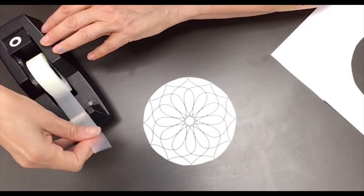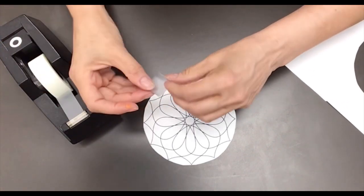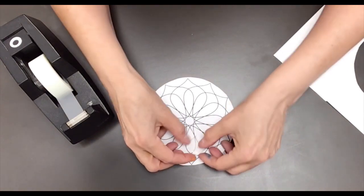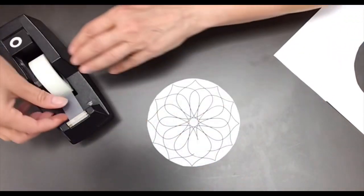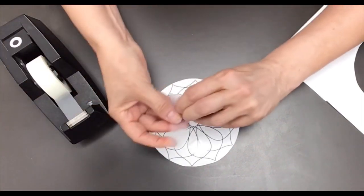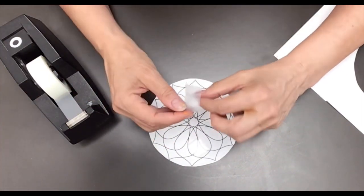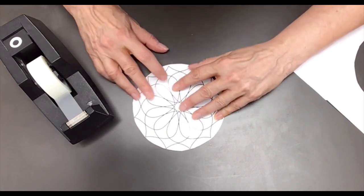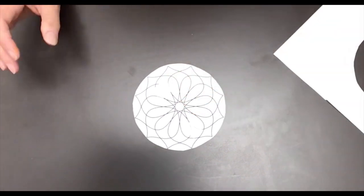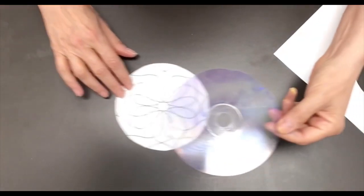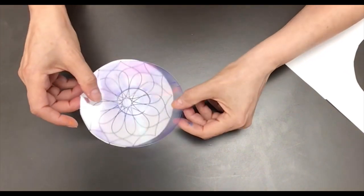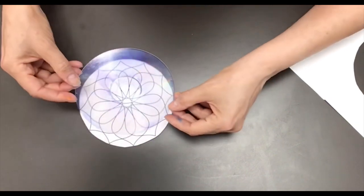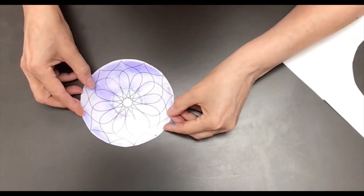Take some tape, double it up, and then put it on your template like this. The tape is clear so you'll still be able to see the pattern through your disc. Then take your disc and remember it has to be the Mod Podge side up because that's what the paint's going to stick to and gently set it over top of the template.